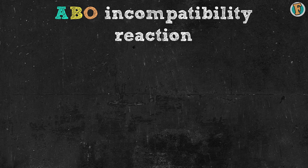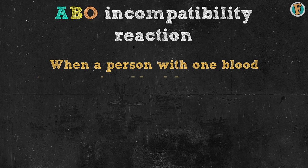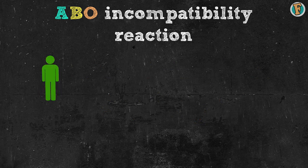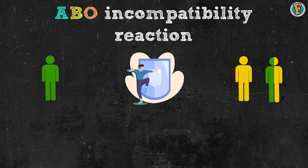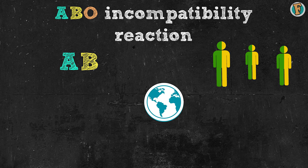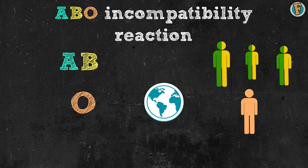An ABO incompatibility reaction is defined as follows: when a person with one blood type receives blood from someone of a different blood type, their immune system may react. For instance, if a person with type A blood received a transfusion of type B or AB blood, the immune system attacks and destroys the new blood cells. If you have both A and B antigens, your blood type is AB — this makes you a universal recipient, able to receive any blood. However, you can only donate blood to people with type AB. If you have type O blood, containing no antigens, you are a universal donor and can give blood to anyone without inducing an immune response.